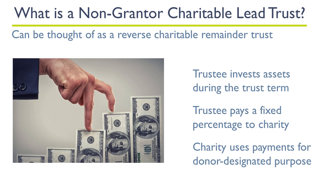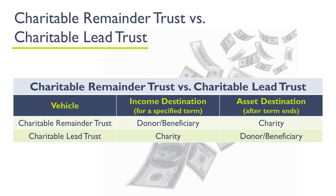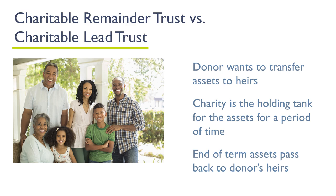In some regards, this is the exact reverse of a charitable remainder trust. With a charitable remainder trust, the donor receives the income, and at the end of that trust term the charitable remainder goes to charity. With a charitable lead trust, the income goes to the charity, and the actual assets of the charitable lead trust revert back to a family member. This is typically known as a wealth transfer type of arrangement, where the donor is trying to transfer assets to heirs and is willing to set the assets aside for a specific period of time, letting the charity receive the income off those assets and ultimately passing the assets on to their heirs.